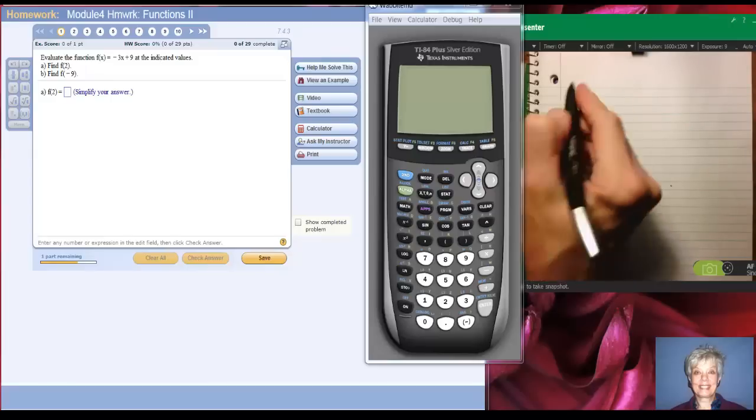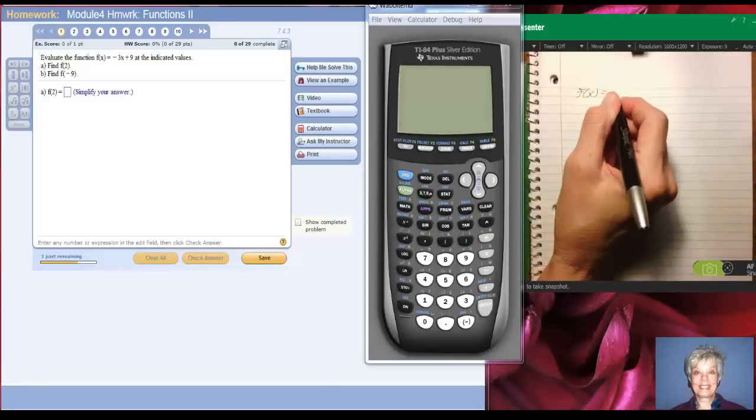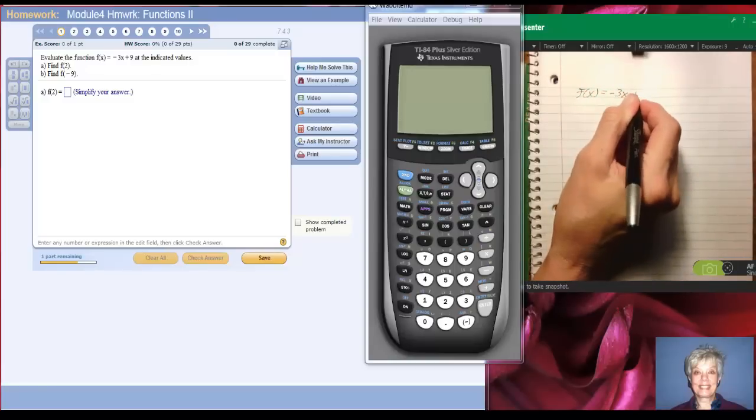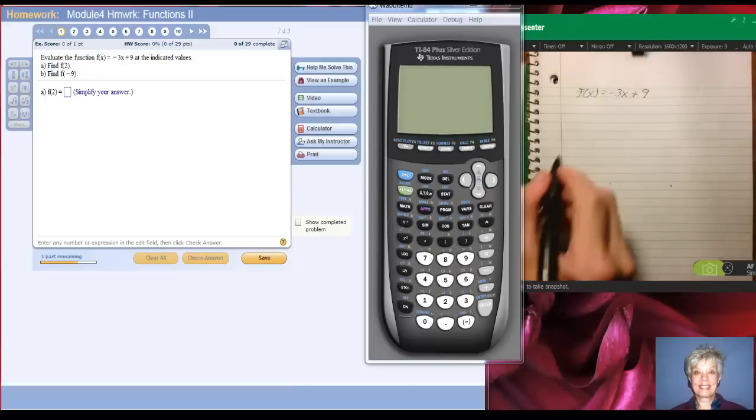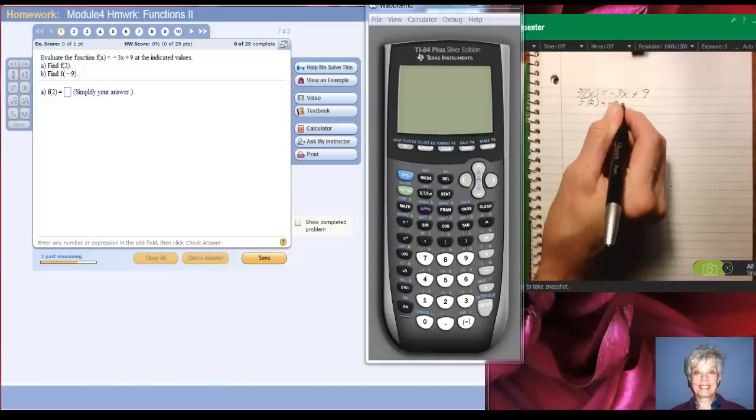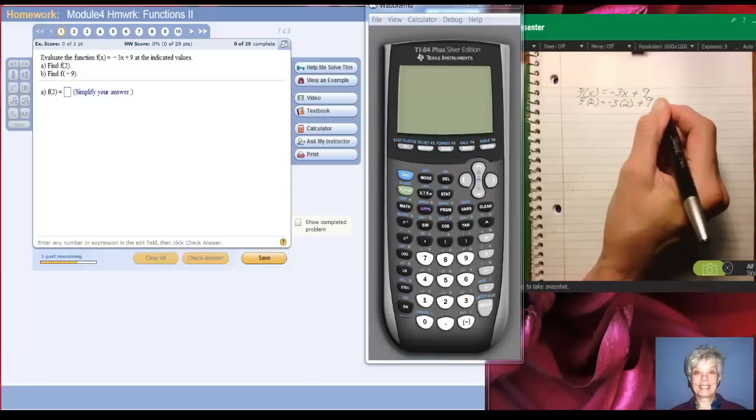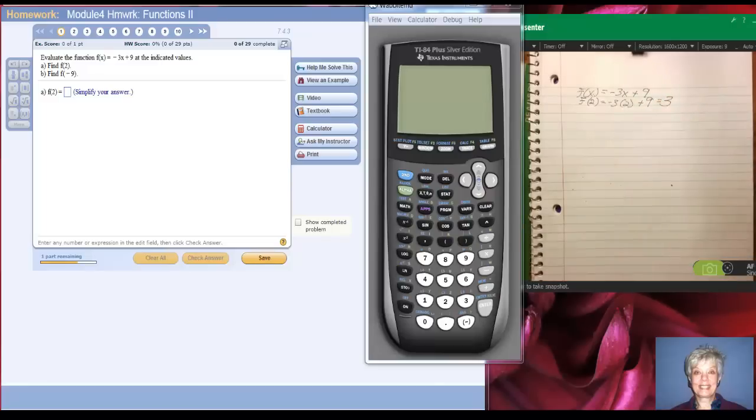We're going to evaluate the function f of x equals negative 3x plus 9, and we're asked to find f of 2. We'll put the 2 in for the x, so we're going to put it in over here. That's going to be negative 6 plus 9, that'll be positive 3. So f of 2 equals positive 3. Let's see if I'm right. Nice work.